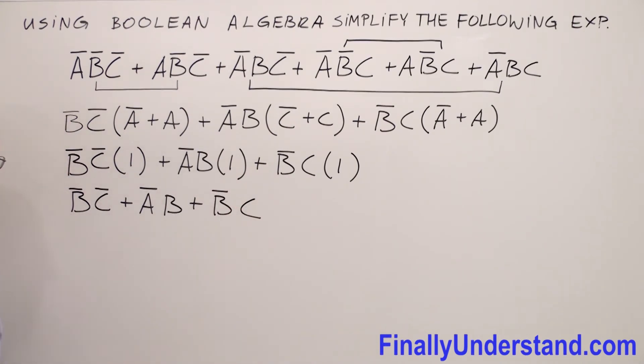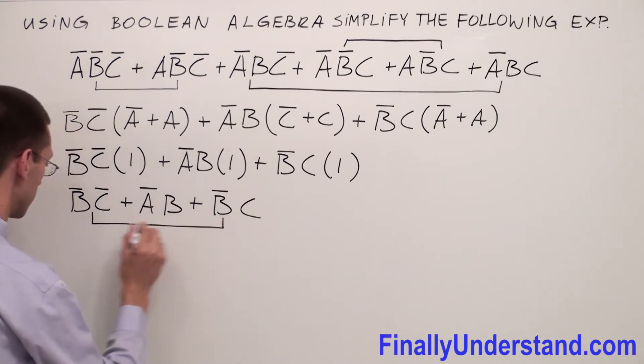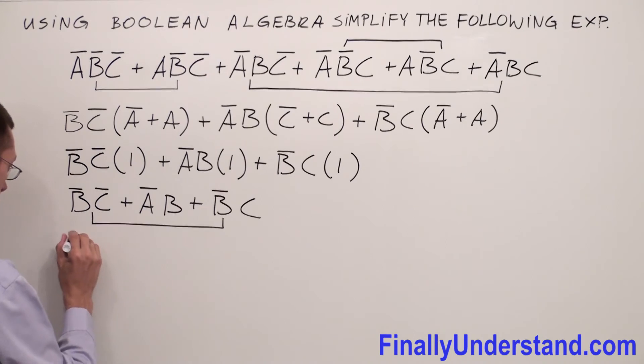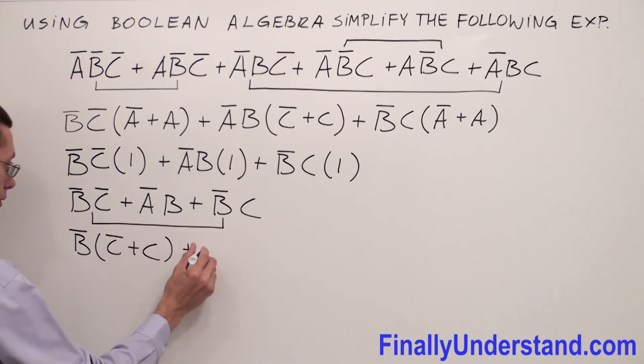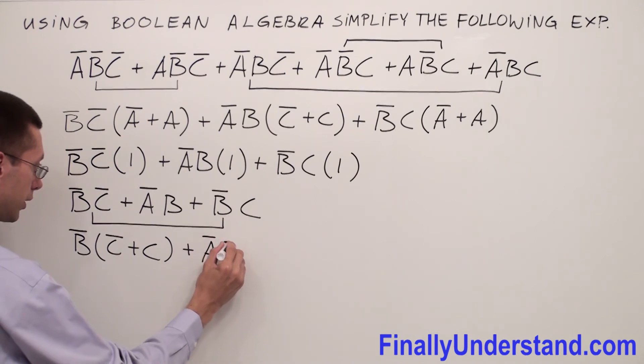Let's take a look at what we can factorize from this expression. We have B̄ in these two terms. I'm going to factorize B̄. Inside of the parentheses I'm going to write C̄ plus C plus ĀB̄.